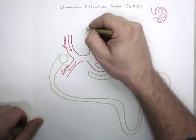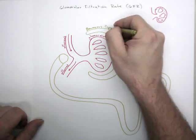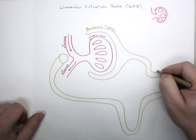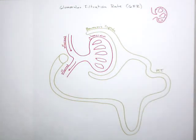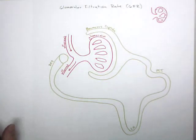So again, this would be called Bowman's capsule. This is called the proximal convoluted tubule, which I'll shorten to PCT. This is the loop of Henle. And this is the distal convoluted tubule.